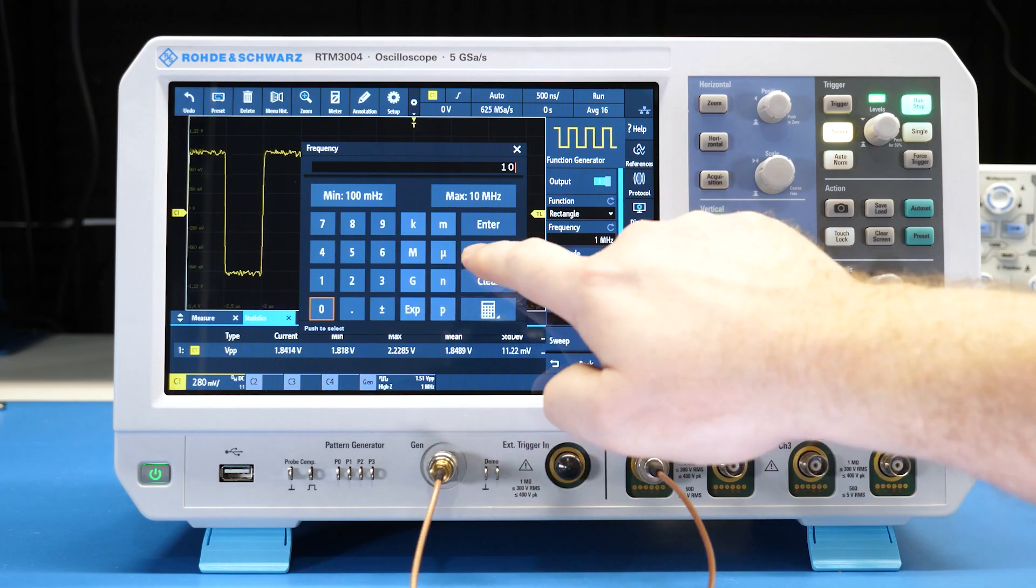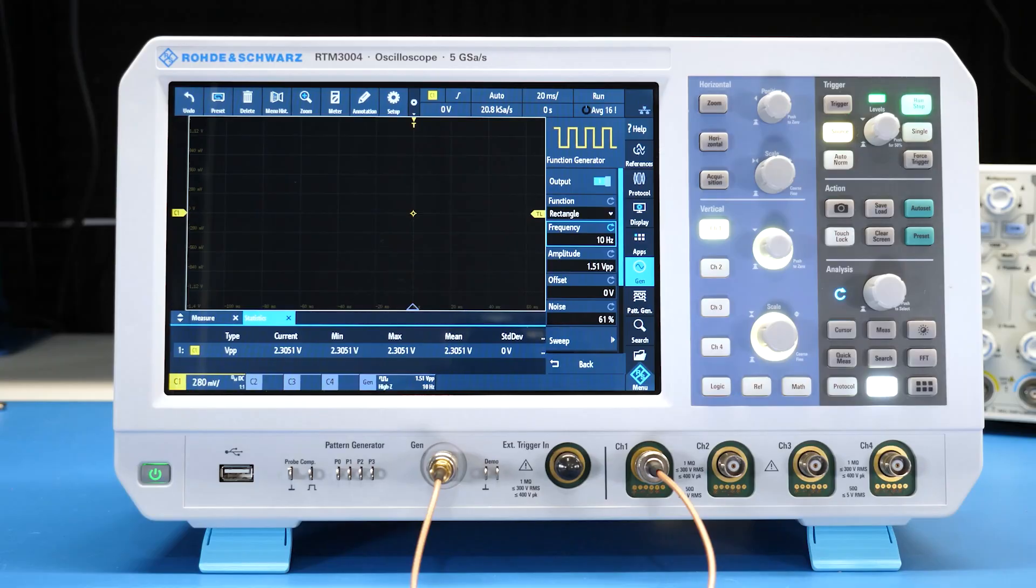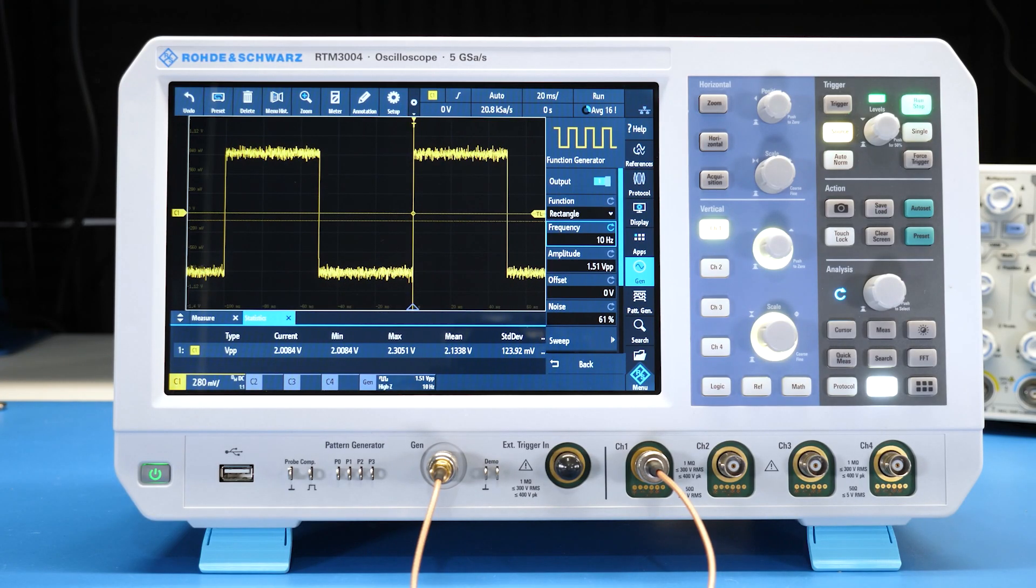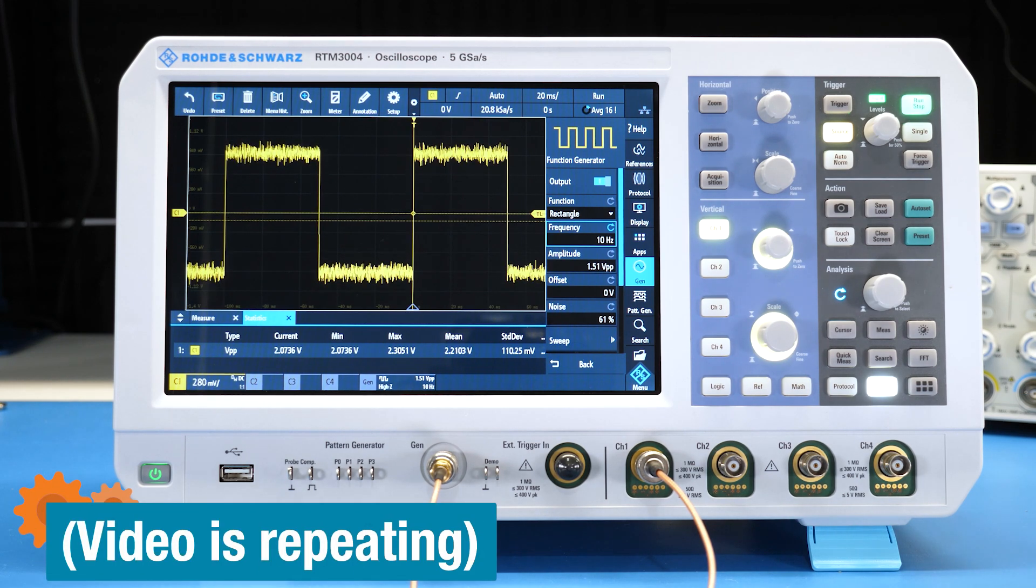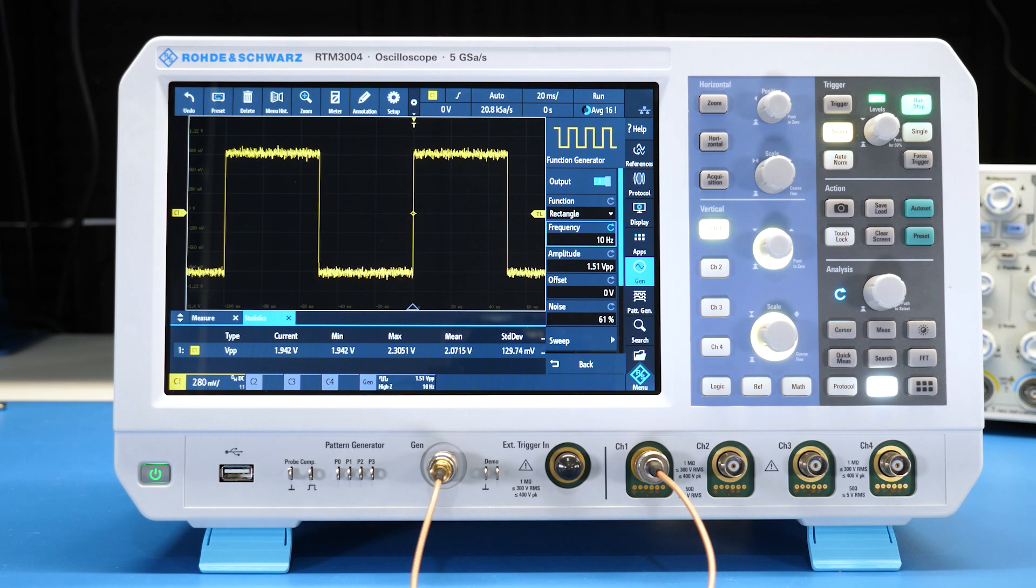If I slow the generator down to 10 hertz and clear the screen, you can see why. As the acquisitions get averaged together, the noise gets removed. But the scope measured that first peak-to-peak waveform, so the max stays the max.